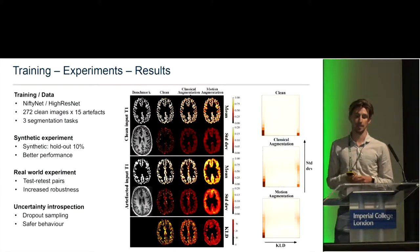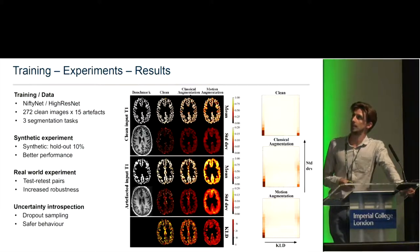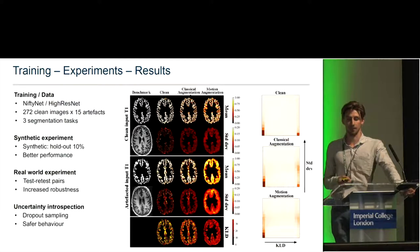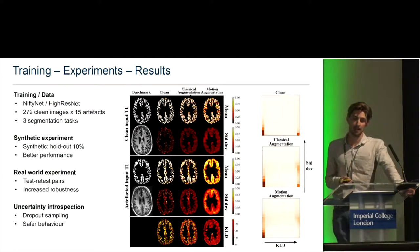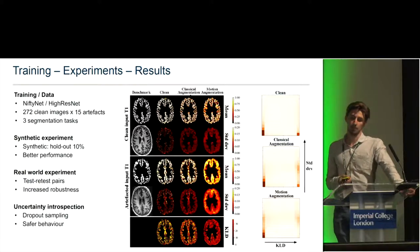We evaluate our augmentation model on a number of experiments. We performed three tissue segmentation tasks on brain images using NiftyNet and the HighResNet architecture, using 272 clean images and generating 15 artifacts per scan. In a synthetic holdout of 10% of the dataset, motion-augmented models performed better over a number of segmentation error metrics compared to models trained without augmentation or with only classical augmentations. In a real-world setting using 106 test-retest pairs where one image from each pair contained motion artifacts, our motion-augmented models again showed increased robustness.